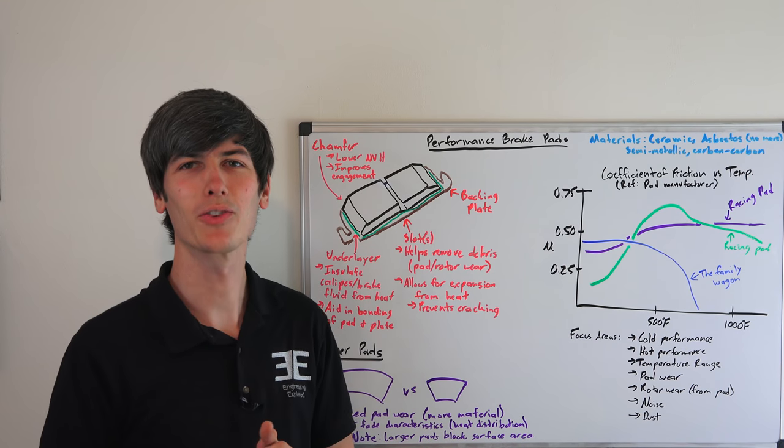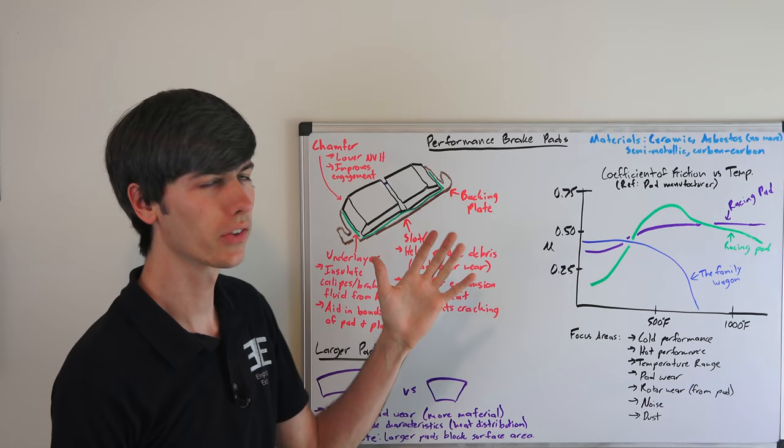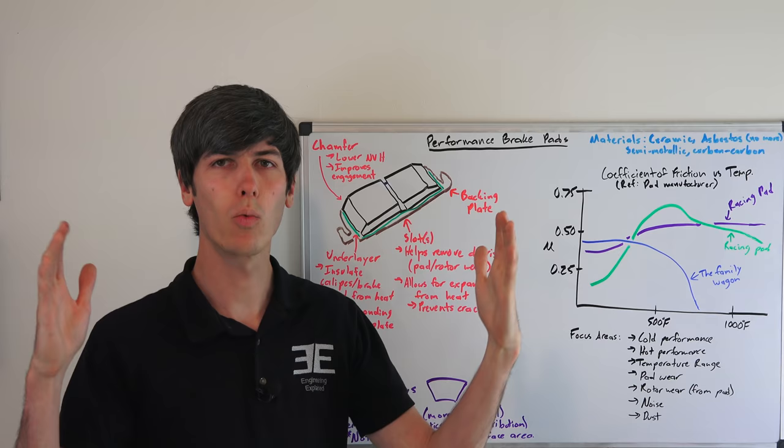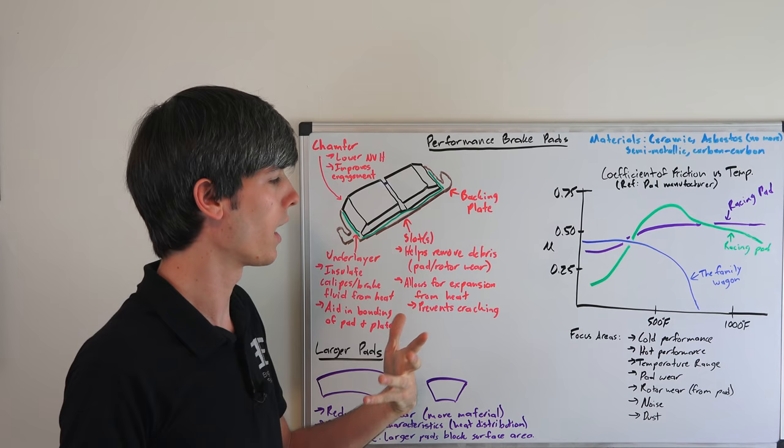Hello everyone, and welcome. In this video we're going to be talking about performance brake pads and there's really seven key focus areas when looking into brake pads: cold performance, hot performance, how wide is that temperature range, pad wear, rotor wear due to the pad selection that you make, and then depending on the application, noise and dust may matter as well.